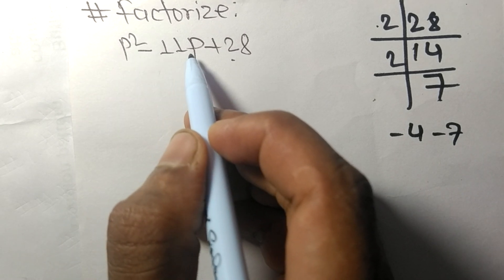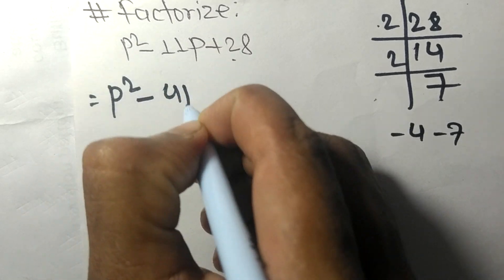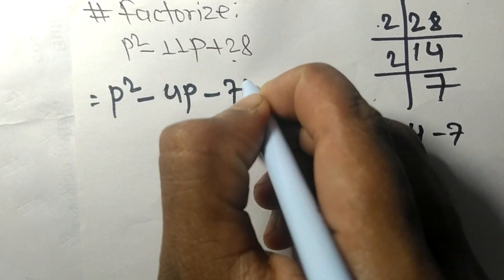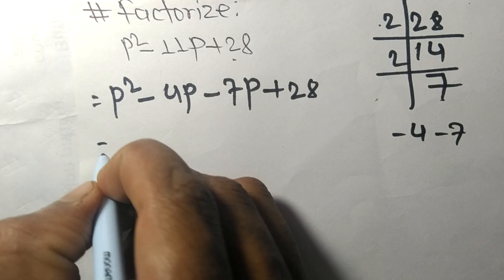So we can write P² - 4P - 7P + 28. Minus 4P minus 7P equals minus 11P.